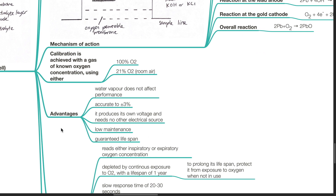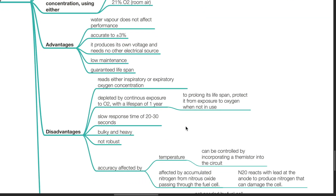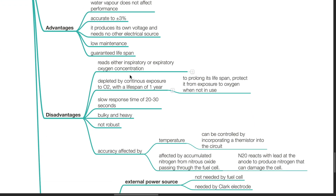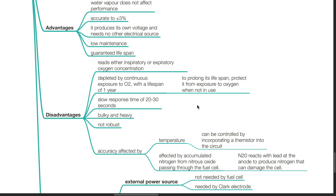Advantages of the fuel cell: water vapour does not affect its performance, it is accurate to ±3%, it produces its own voltage and needs no external electrical source, and it has low maintenance and a guaranteed lifespan. Disadvantages: it reads either inspiratory or expiratory oxygen concentration, and it is depleted by continuous exposure to oxygen with a lifespan of 1 year. To prolong its lifespan, protect it from exposure to oxygen when not in use.